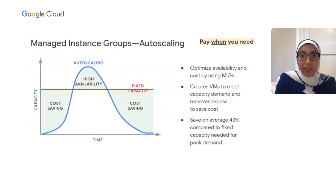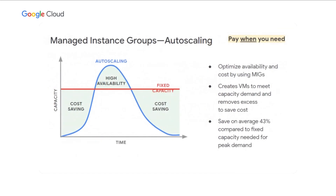If the load of your workload is variable over time, like web serving, provisioning a fixed capacity will be wasteful. Managed instance groups, or MIGs, can be a very good fit here. MIGs provide many benefits, one of which is autoscaling capability that creates more VMs when there is demand and removes them as demand decreases. By using autoscaling, we find that on average customers can save up to 43% compared to provisioning VMs for maximum capacity dependent on peak times.